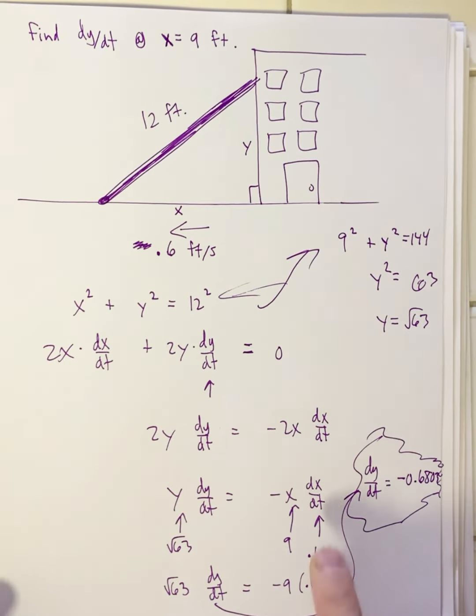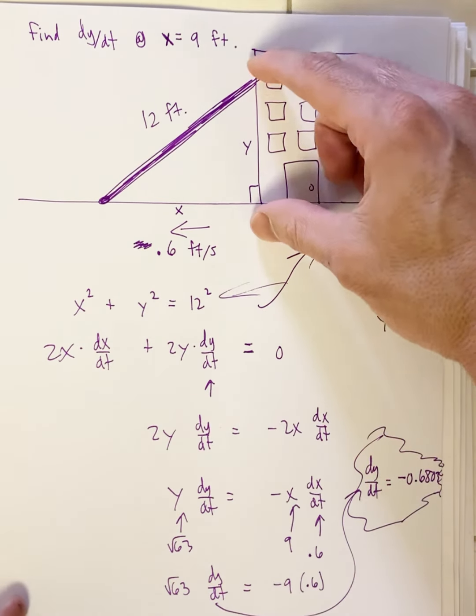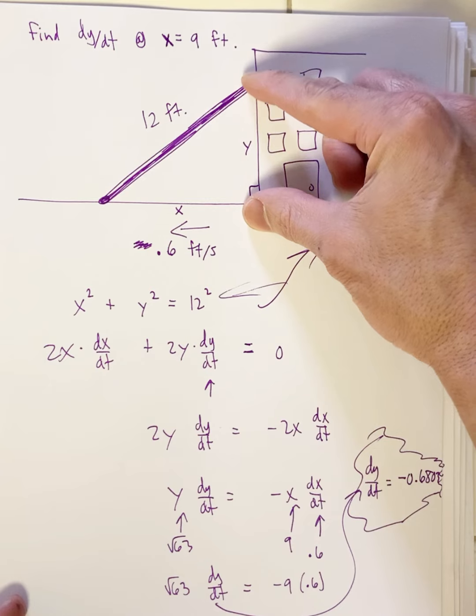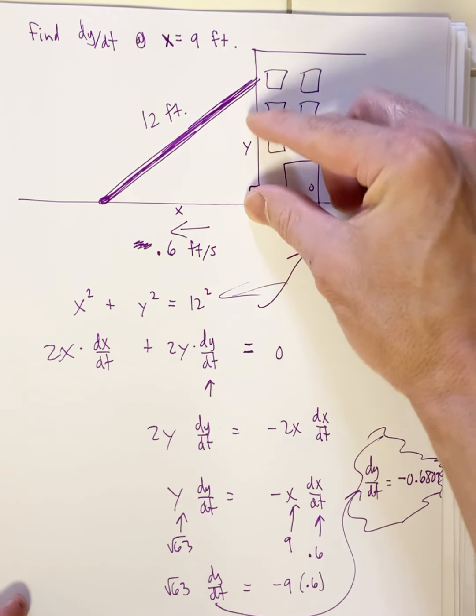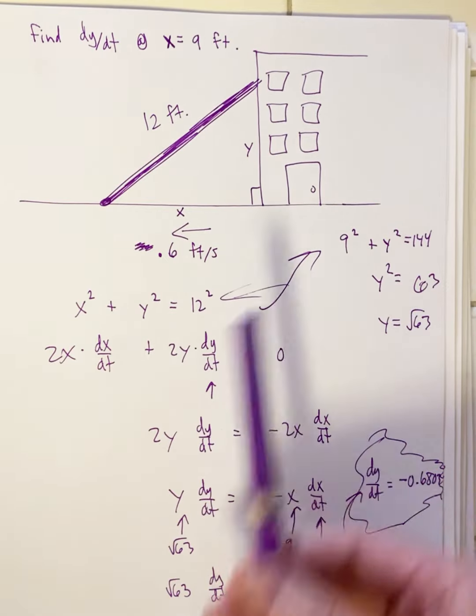But let me say this before I let you go. dy/dt is negative as it should be because y is getting smaller. And so its rate should be negative because this is getting smaller. So that's the general routine for problems like this.